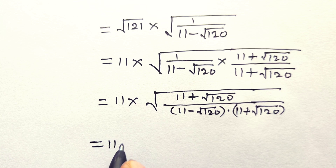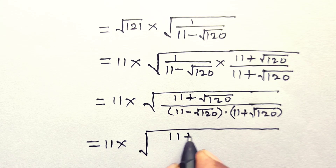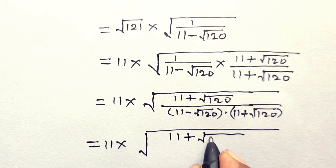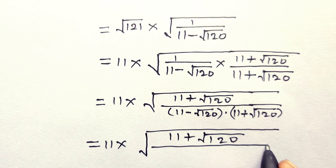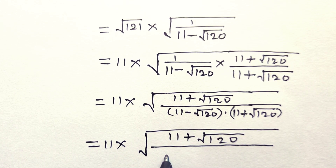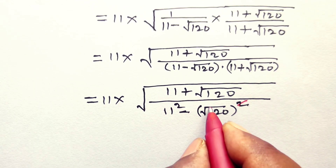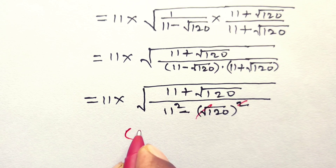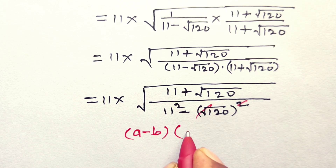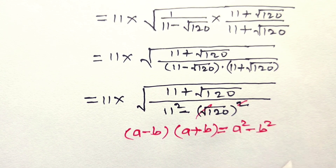This is equal to 11 into, keeping the numerator as it is. Now the denominator is in the form of (a minus b) into (a plus b), so applying the formula: a minus b into a plus b equals a squared minus b squared. The denominator becomes 11 squared minus (square root of 120) squared, and the square cancels with the square root.